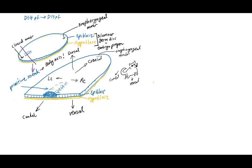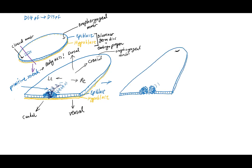Turning back to the primitive streak: the cells continue to divide and get crowded. These crowding cells come together towards the longitudinal midline and start to ingress towards the hypoblast cell layer. In cross-section, we see regular epiblast cells and crowded epiblast cells in the primitive streak. As cells move towards the midline, they start to ingress and get pushed down towards the hypoblast cell layer, creating a central linear depression along the length of the primitive streak called the primitive groove.